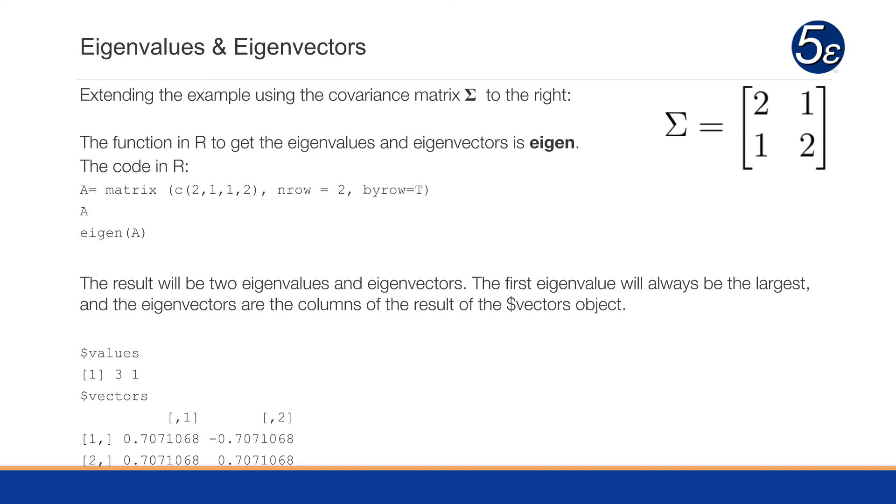Now in R, this is pretty simple to do. Extending the example that we had before, we have our covariance matrix here to the right, where we have 2, 1, 1, 2. Now in R, to get the eigenvalues and eigenvectors, we'll use the function called eigen.